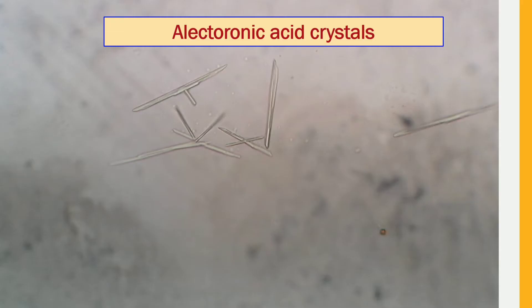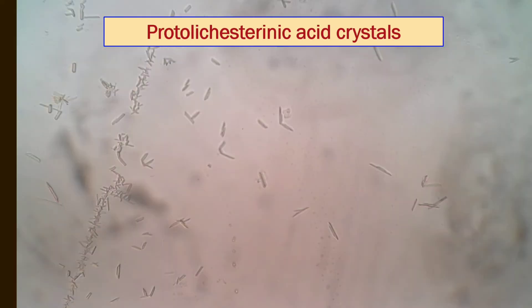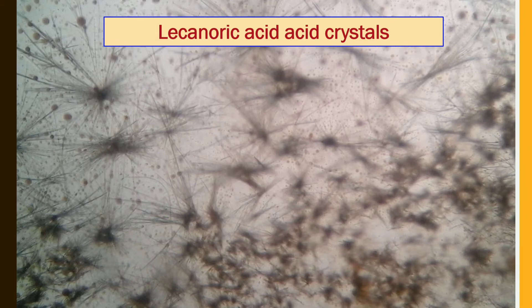A GAW solvent mixture is added with the extract of lichen and observed under the microscope after gently heating. This is atranorine crystals — it looks like small bead-like, ice grain-like structures. Protoliquasternic acid looks similar to atranorine.